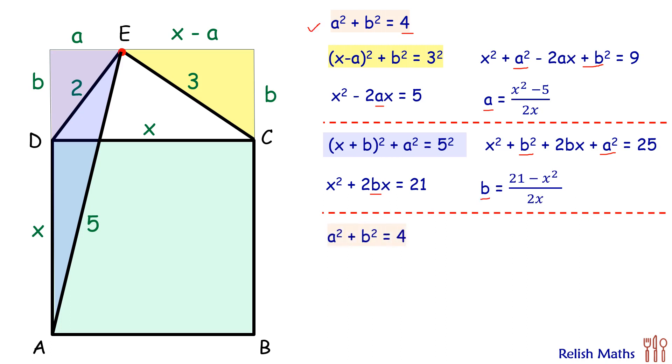In this we are putting the value of a and b we have derived. We'll get our equation as this. When we will square and simplify it, we'll get a biquadratic. We'll treat it as quadratic in terms of x²: x⁴ - 34x² + 233 = 0. We'll apply our quadratic formula to get x² = 17 ± √56.